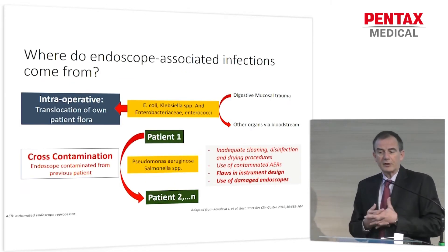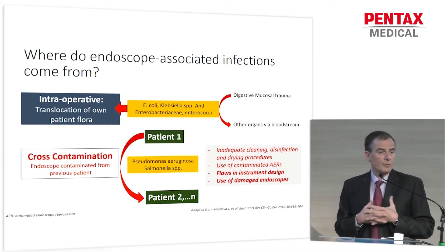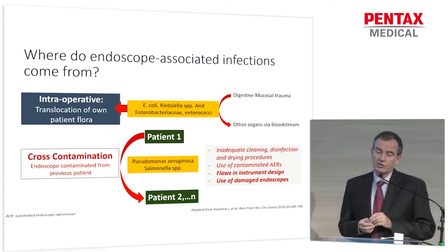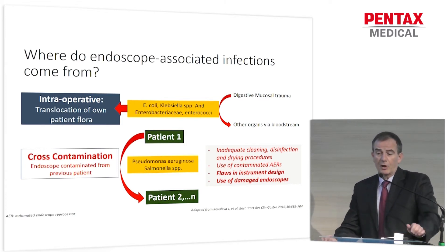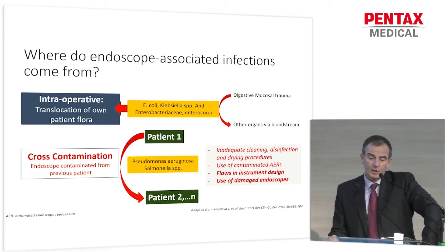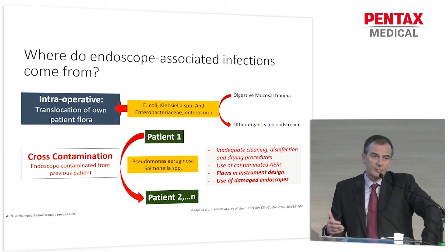We also know that endoscope-associated infections can come through two different pathways. One, which is very common, is intraoperative, due to the translocation of the patient's own flora, where germs pass through the digestive tract after a digestive mucosal trauma. The second pathway is cross-contamination from one patient to subsequent patients treated with the same contaminated endoscope.